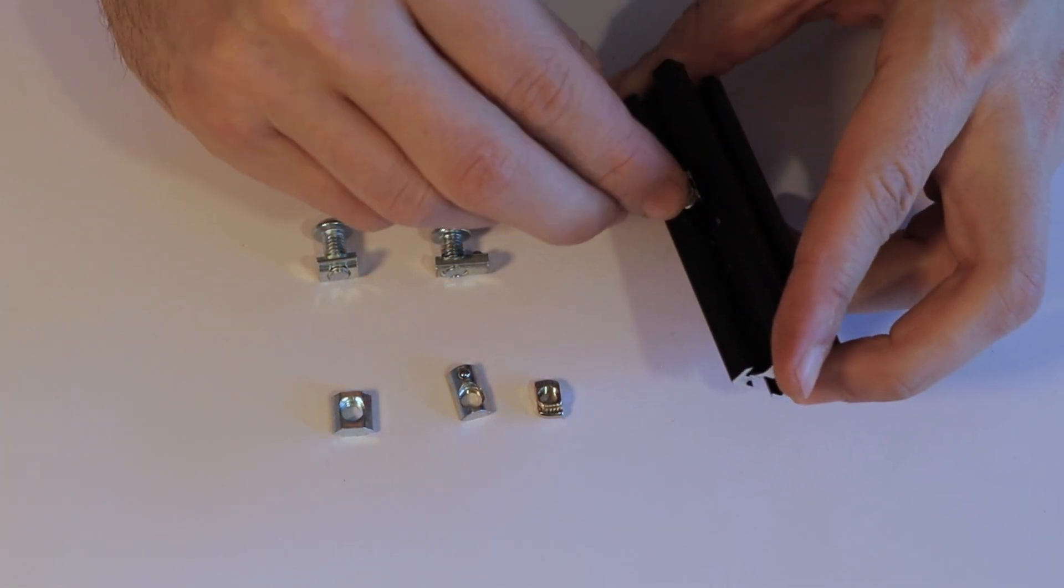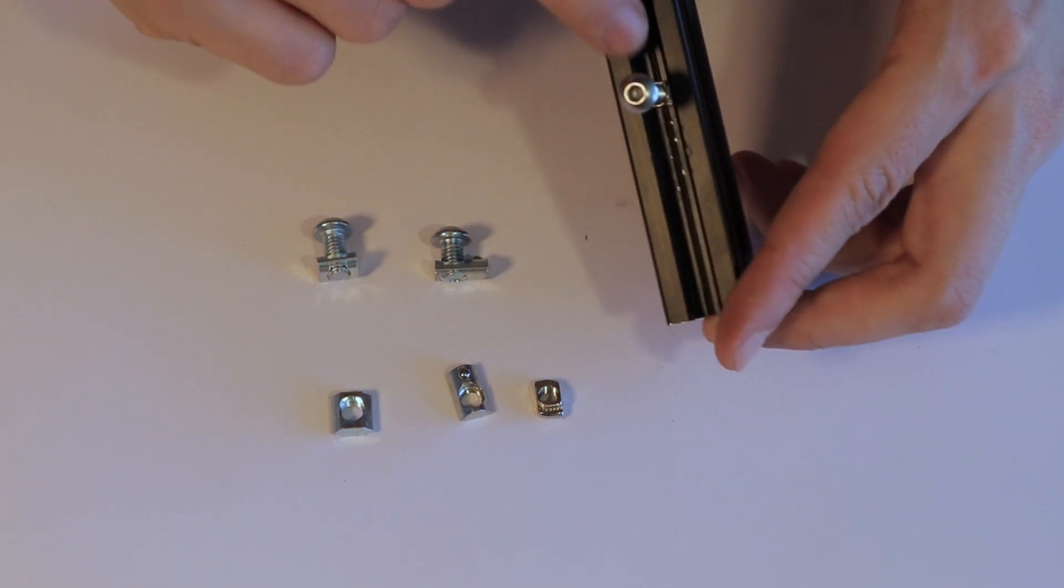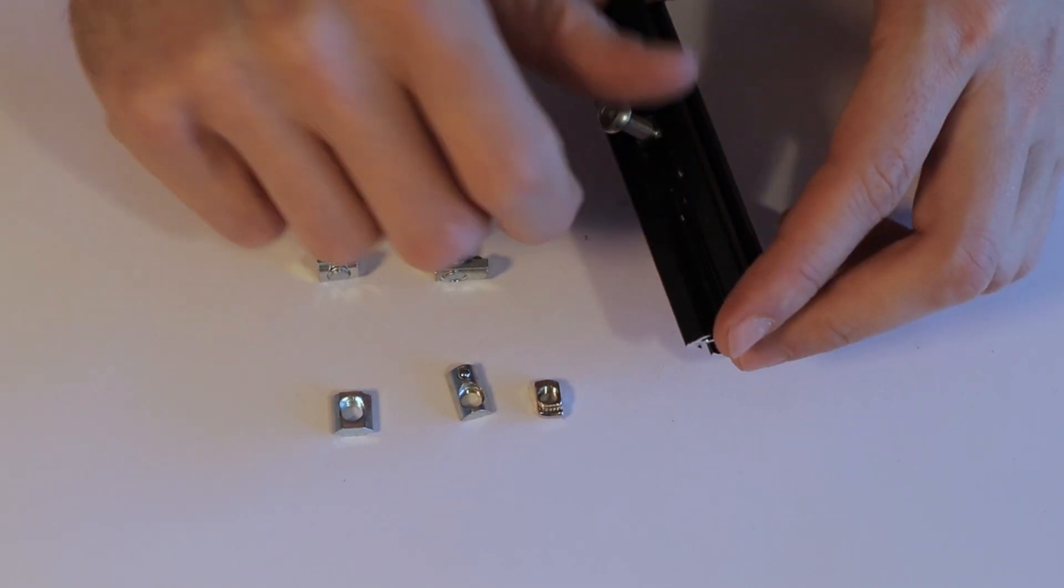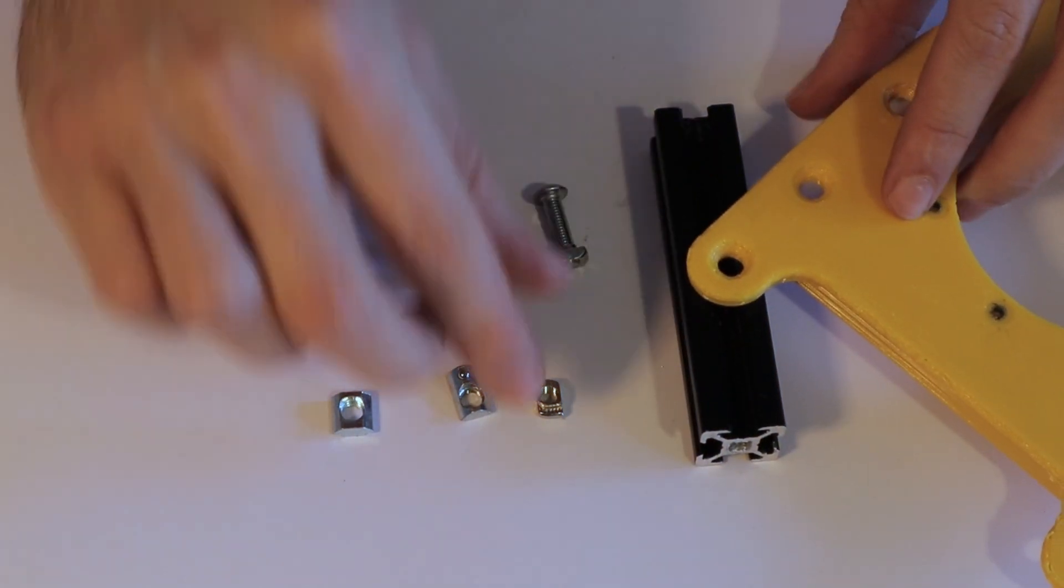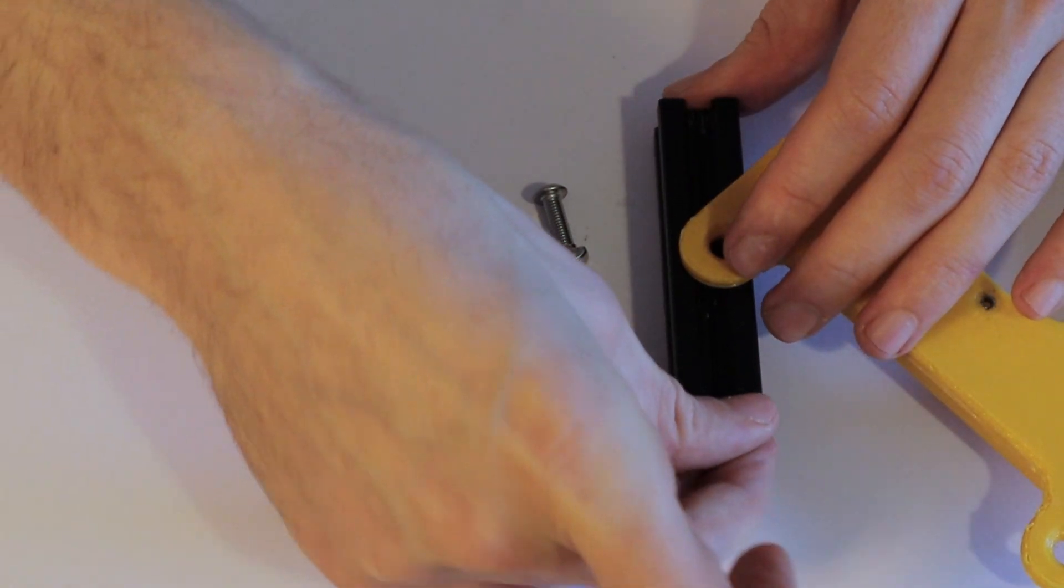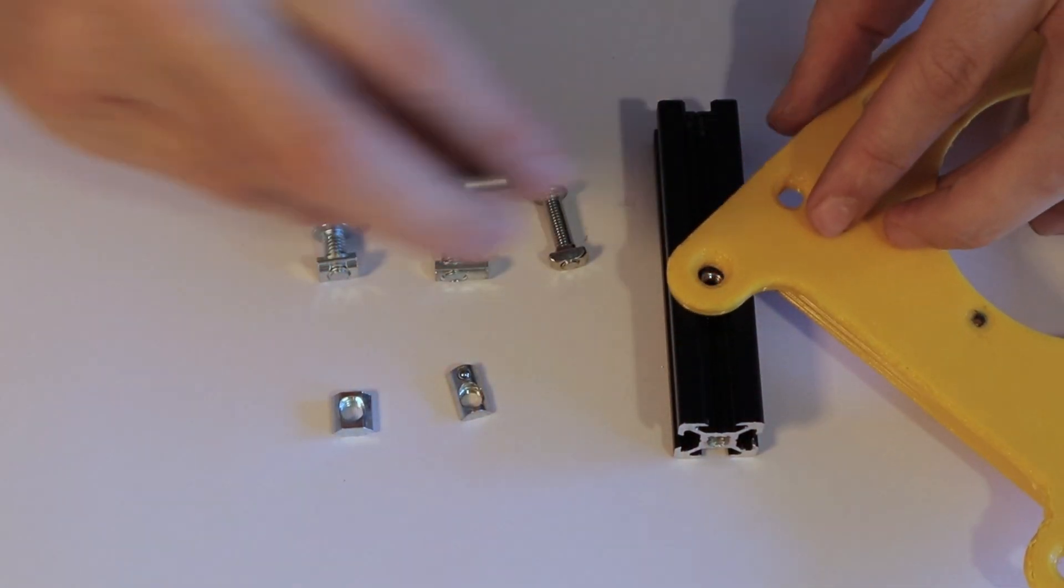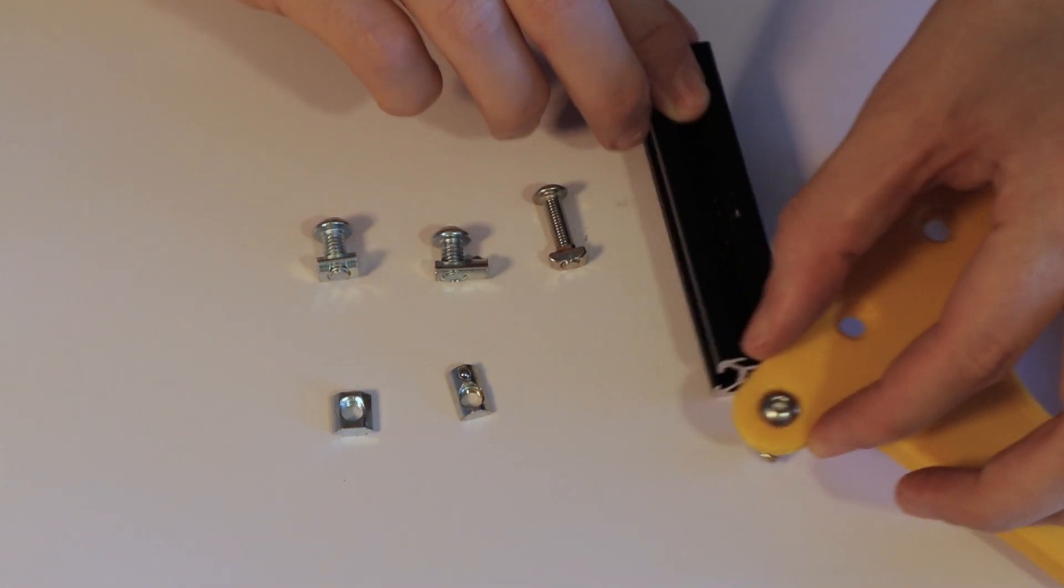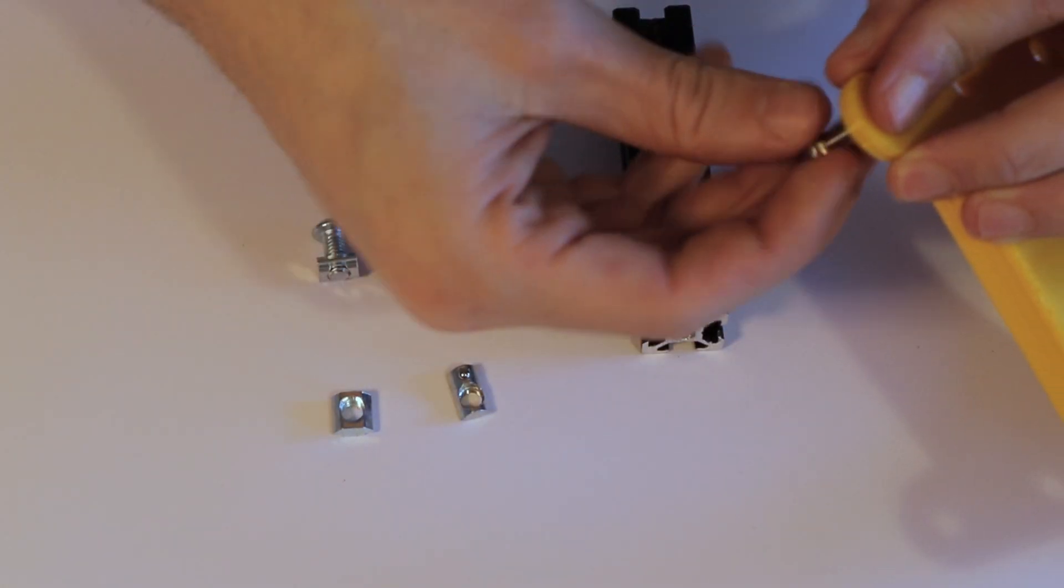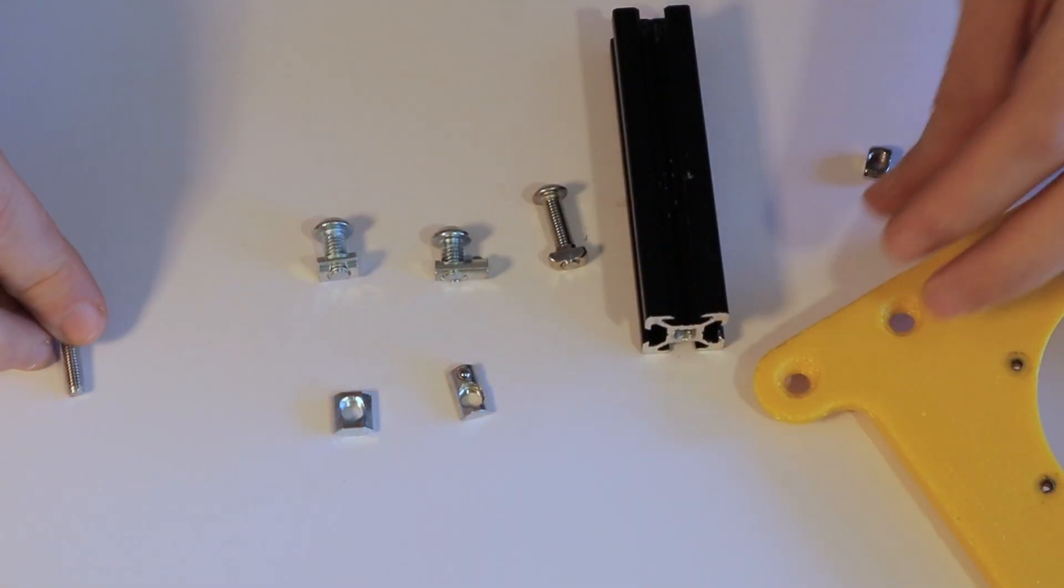For example this twist nut you place and then you twist it and it automatically locks itself in place. This is super convenient, that's the one I started with, but it turns out that if you want to actually use it you usually cover it with something and then you can no longer see if it twisted correctly. You have to feel if it twisted all the way and in some cases if it doesn't twist then it stays loose and there's a risk when you design something that needs to be tight.